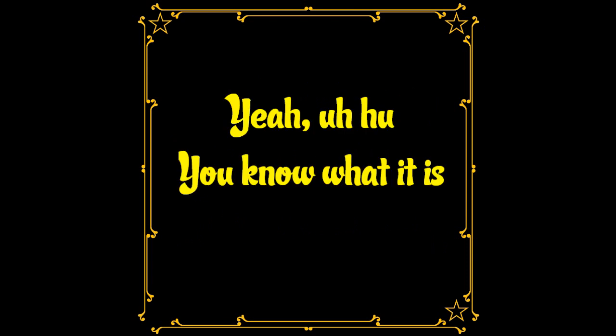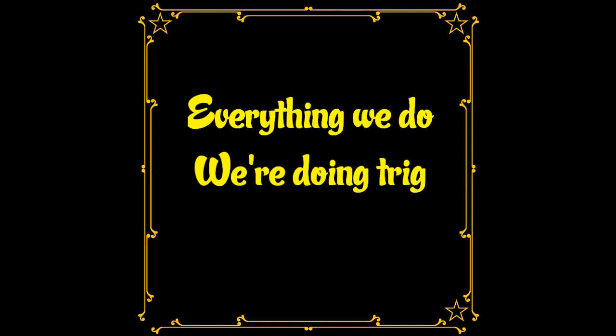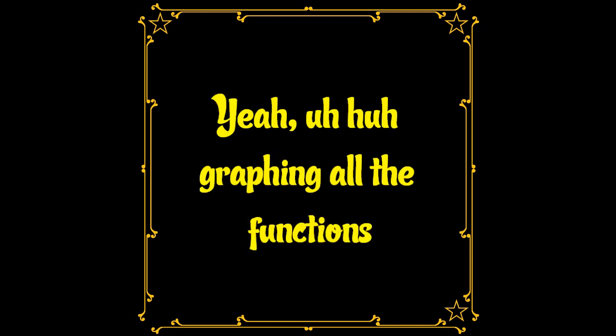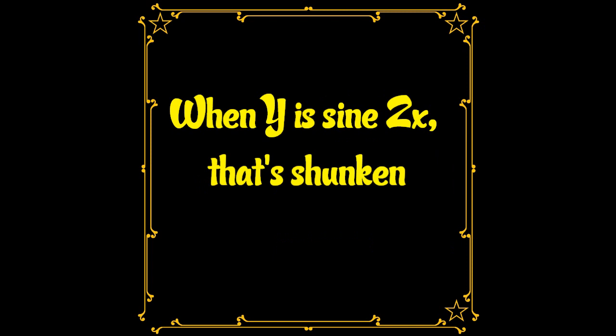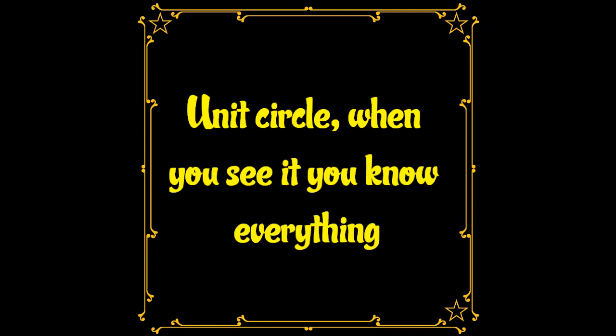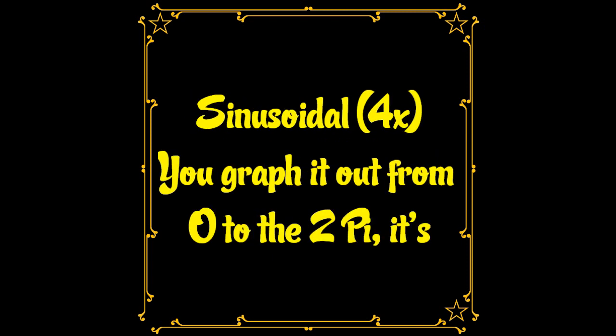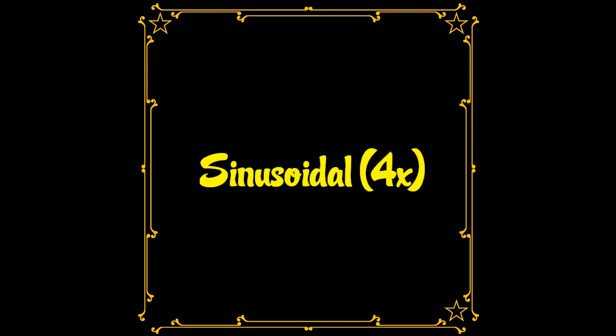Everything we've grown — fruits. Wrapping all the functions; when y is sine to x, x that's shrunken, and units are close. When you see it, you know everything. Sinusoidal, sinusoidal — you graph it out from zero to the two pi.